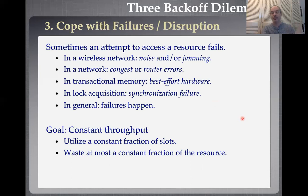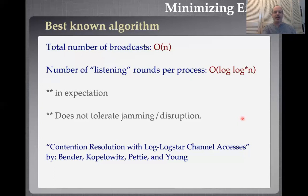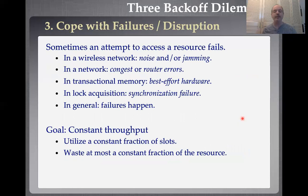What's the third dilemma? So far we know how to efficiently get order-one throughput, and how to minimize the number of attempts. There's a third thing we might have to trade off: robustness. How do we deal with failures or disruption? A lot of what I worry about in distributed algorithms is how we deal with failures, malicious attacks, and unreliable systems.